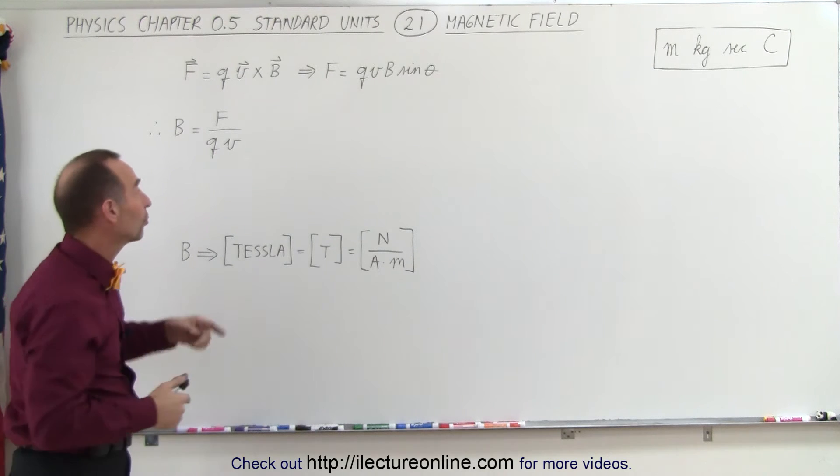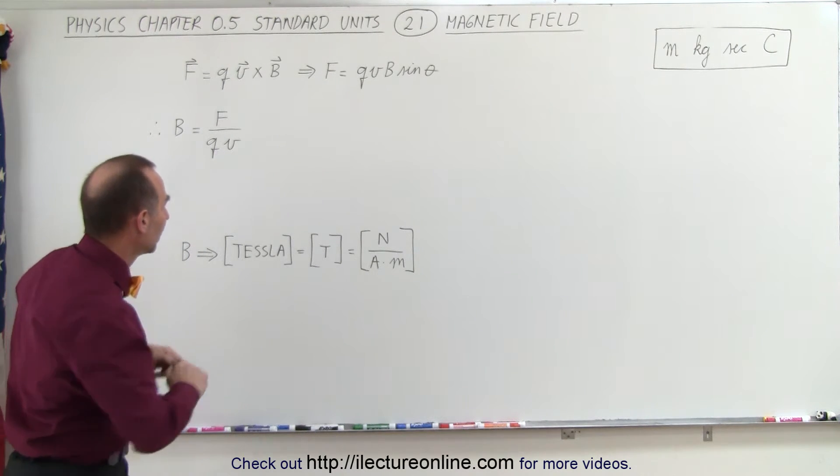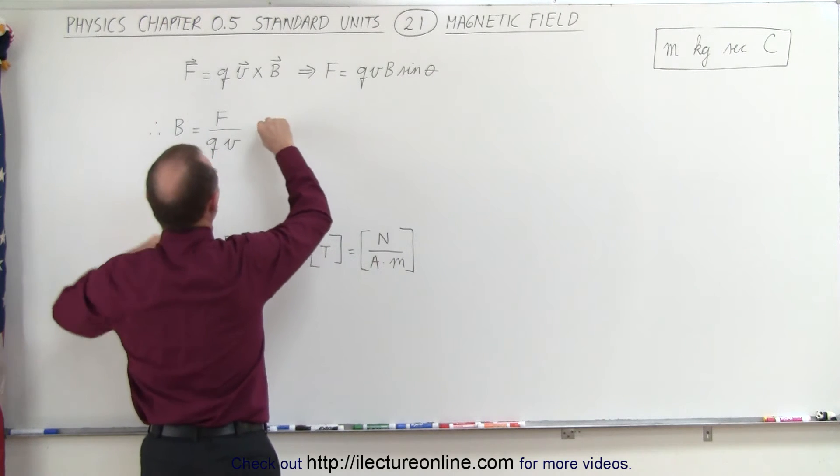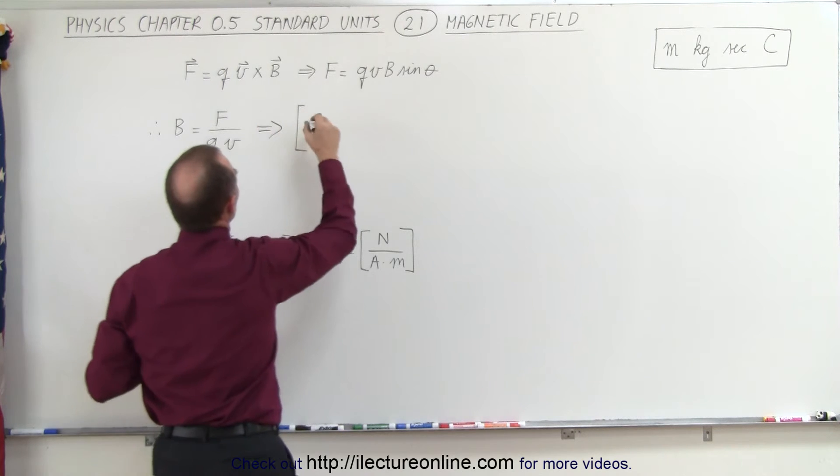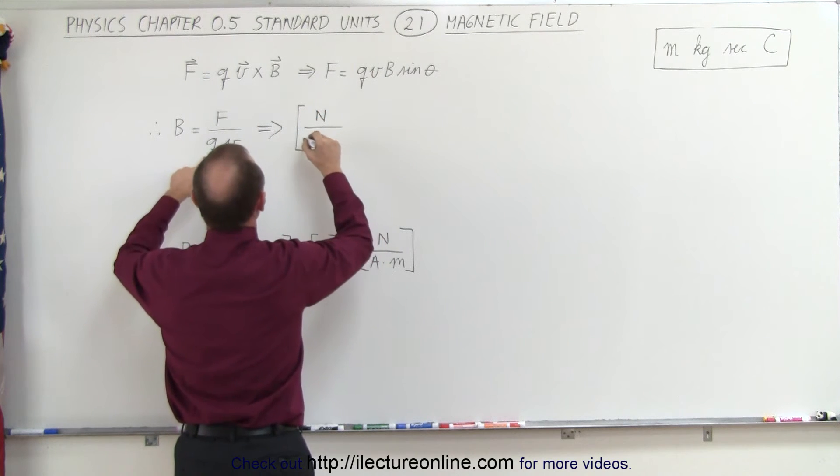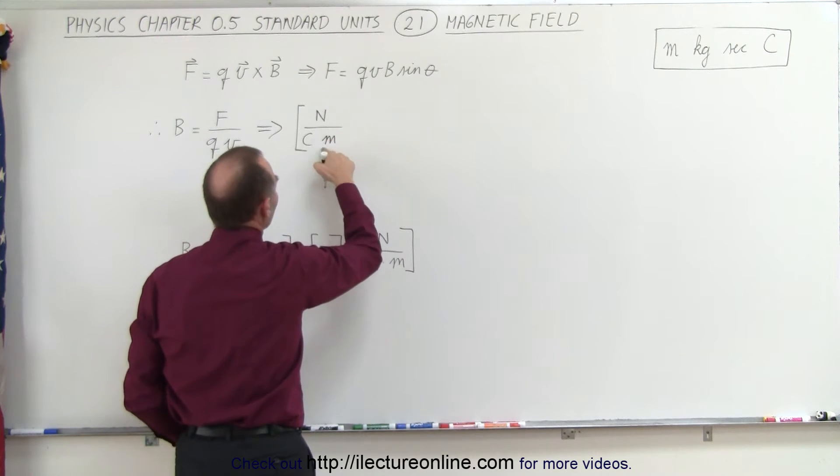Now using those units, we should be able to calculate what the units are for the magnetic field. So the units for the force would be newtons, the units for charge is coulombs, and the unit for velocity is meters per second.